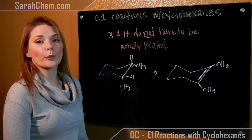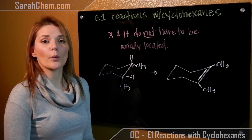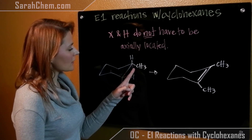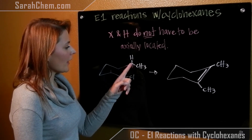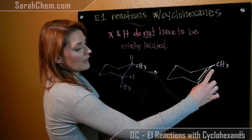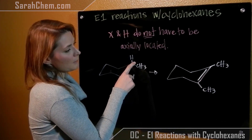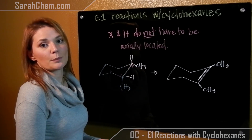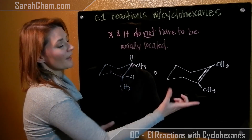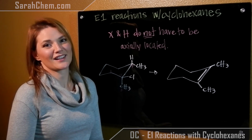When we're trying to consider what the major product will be, we're always looking for the most stable alkene. If we use this as the active beta carbon and this hydrogen is lost, we will get a more substituted alkene than any other case. So this is the beta carbon we'll use to predict the major product, which is this one here. And that's how you predict a product for an E1 reaction with a cyclohexane.